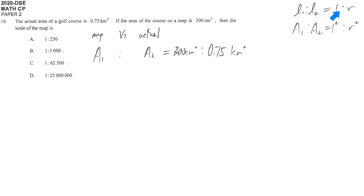Therefore L1 to L2 is equal to square root 300 cm squared to square root 0.75 km squared. This is square root 300, and then cm squared can offset with the square root, so it becomes cm.